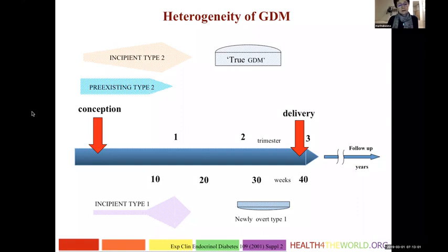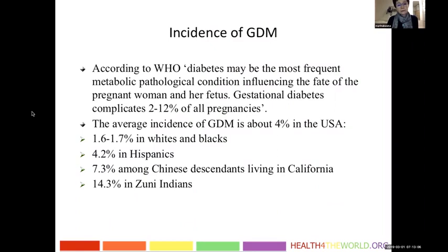What is the incidence of gestational diabetes? According to the World Health Organization, diabetes may be the most frequent metabolic pathological complication influencing the fate of pregnant women and their babies. Gestational diabetes complicates anywhere from 2 to 12% of all pregnancies depending on the study. In the United States, the average incidence is about 4%, and it varies depending on ethnic population. It is less common in white and Black populations, high in Hispanics, highest among Chinese descendants living in California, and about 14% in Indians.